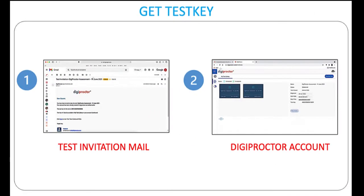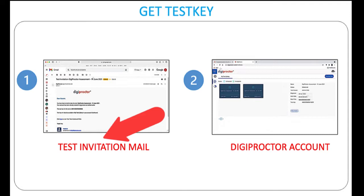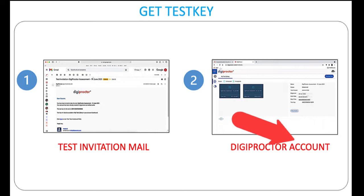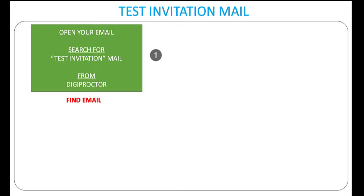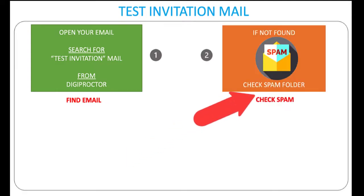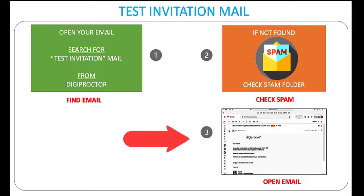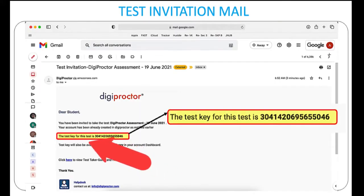You can get your test key from two places. First is from the test invitation mail which DigiProctor would have sent to your registered email ID, informing you of the date and time of the test. This mail contains the test key required to enter the test. To get the test key from the test invitation mail, first search for the invitation mail in your registered email ID's inbox. If you don't find it there, search the spam folder. Open the email — the email contains the test key as shown on the screen.